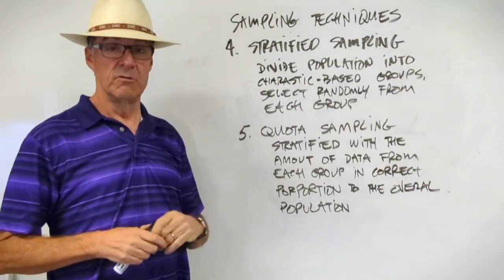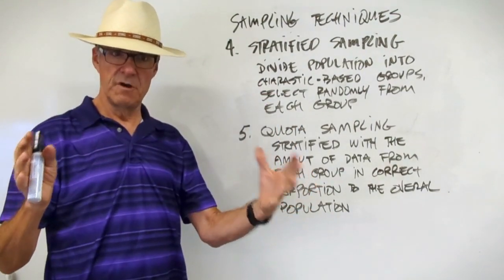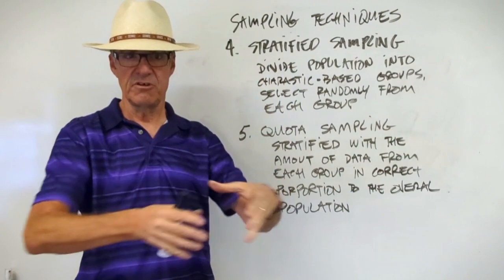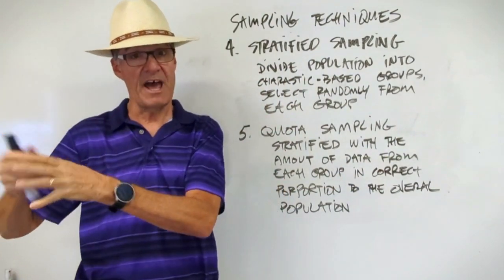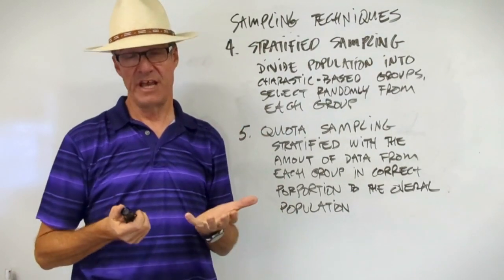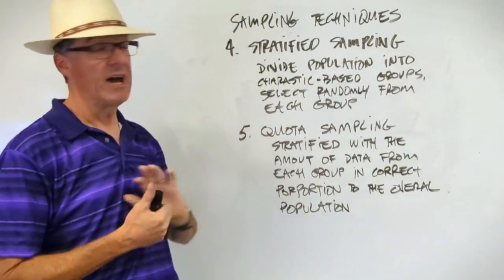In our classroom example, we might take that whole classroom of students that we put into one hat. Now we're going to put a ninth grade hat, 10th grade hat, 11th grade hat, 12th grade hat, and then draw randomly from each hat to get our data points. So that would be stratified sampling.